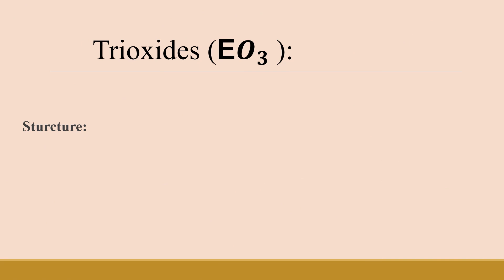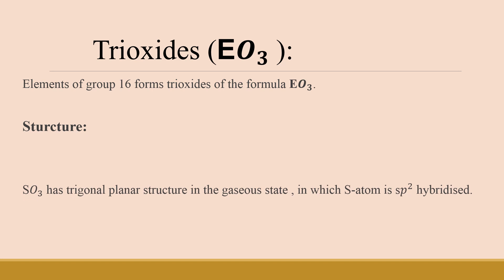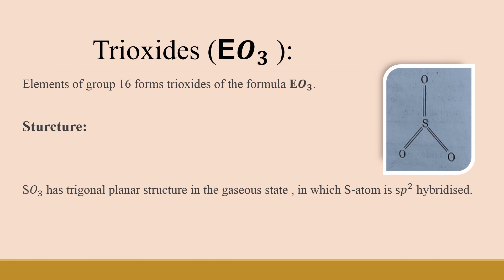Now we come to the next type of oxides formed by group 16: trioxides with the formula EO3, where E is any group 16 element. For the structure of sulfur trioxide, SO3 has a trigonal planar structure in the gaseous state in which the sulfur atom is sp2 hybridized, attached to three oxygen atoms with double bonds.